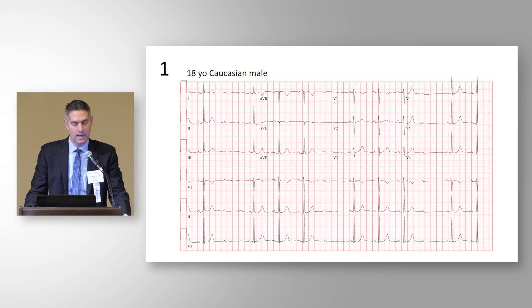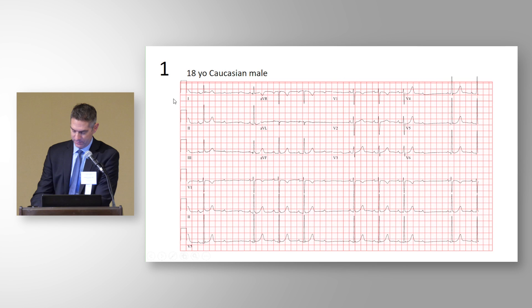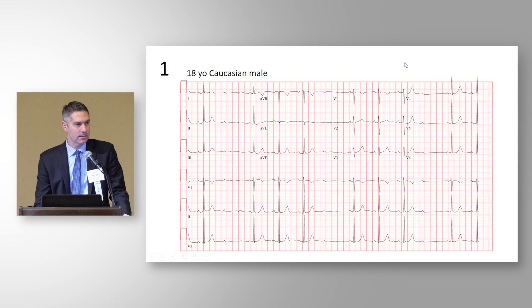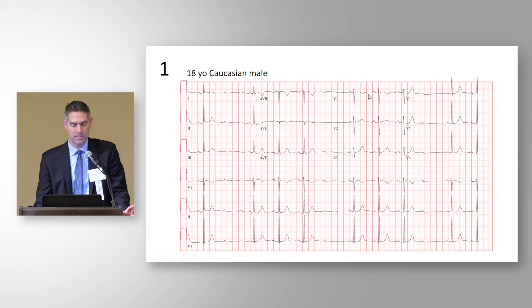ECG number one is an 18-year-old Caucasian male. My assumption when looking at an ECG from a young asymptomatic athlete with no family history of concern is that I'm going to see a normal ECG. So as I walk through it, I'm looking for specific ECG abnormalities that would flag it as abnormal and alert me that more evaluation is needed.